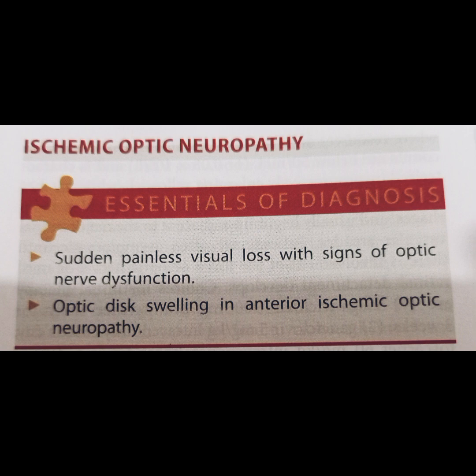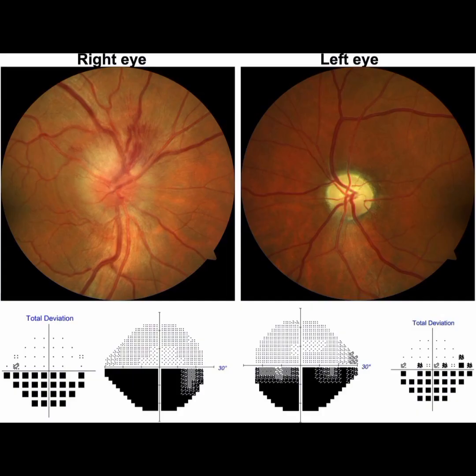Anterior ischemic optic neuropathy is due to inadequate perfusion of the posterior ciliary arteries that supply the anterior portion of the optic nerve. It produces sudden visual loss, usually with an altitudinal field defect and optic disc swelling. In older patients, it may be caused by giant cell arteritis — arteriatic anterior ischemic optic neuropathy.